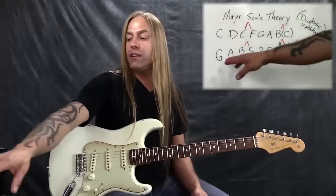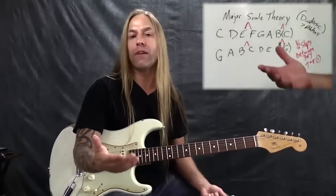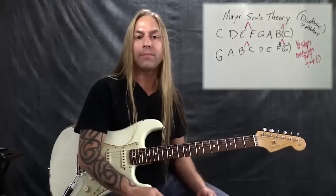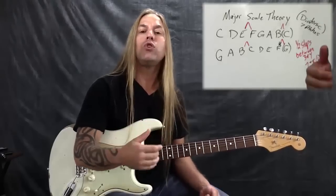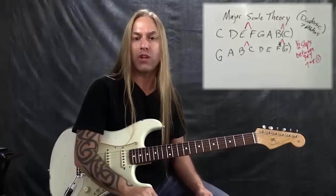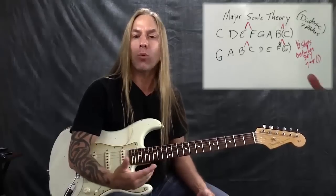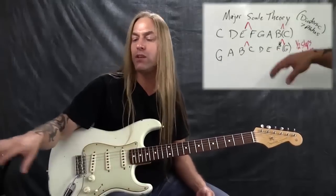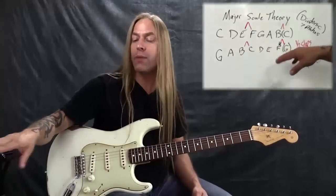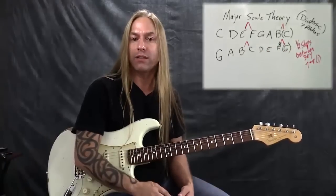So the key of G has one sharp. You might have learned that if you've played piano, but now you know why — the key of G has an F sharp. Now it's set up as do-re-mi-fa-sol-la-ti-do.